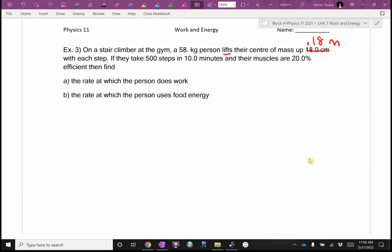Let's keep reading. They lift their center of mass 0.18 meters with each step. If they take 500 steps in 10 minutes. How many seconds? How do I convert minutes to seconds? One minute is how many seconds? 60. Two minutes is how many seconds? 120. How would you turn a 2 into 120? I think it's times by 60. So, 10 times 60. 600. And their muscles are 20% efficient then.